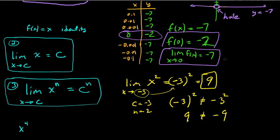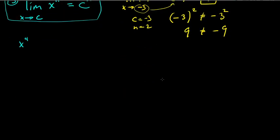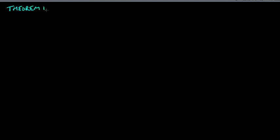So that's the first theorem — just three rules: the limit of a constant is that constant; the limit of x as x approaches c is c; and the limit of x^n as x approaches c is c^n. Now let's look at Theorem 1.2 — more properties of limits.